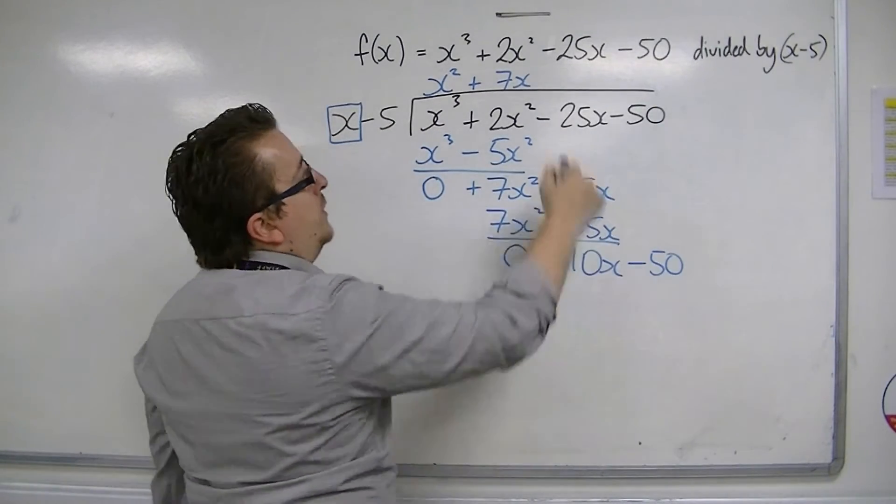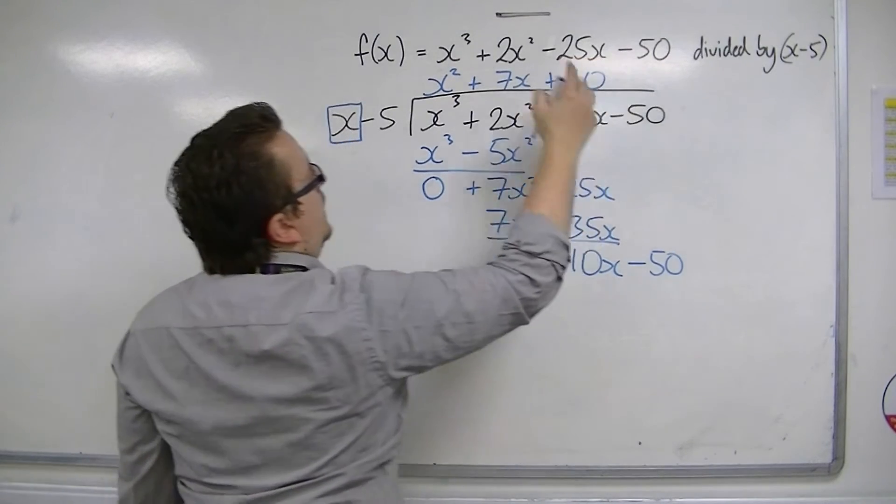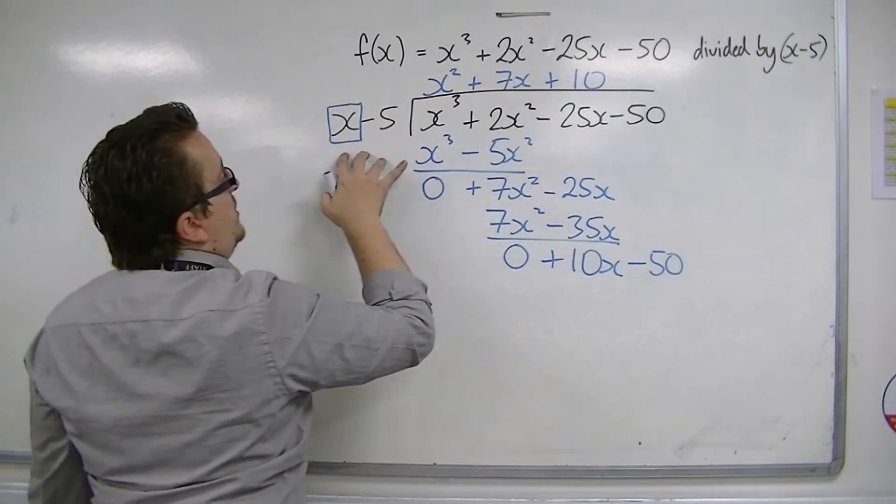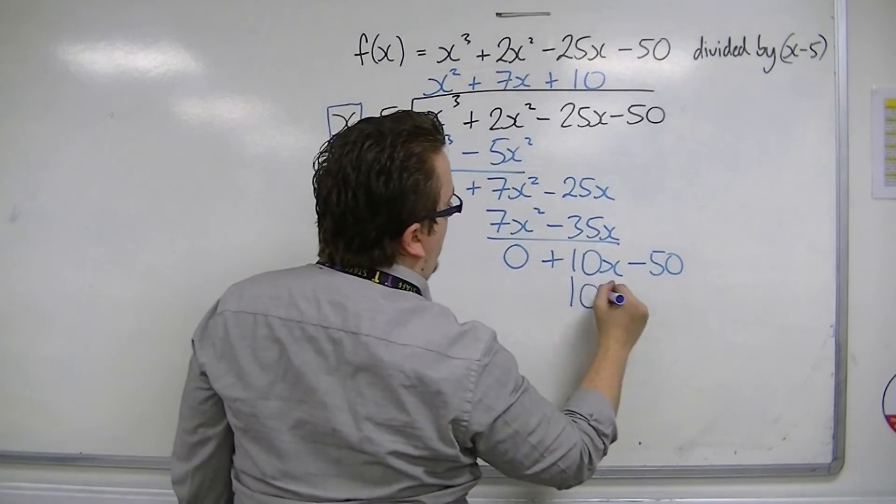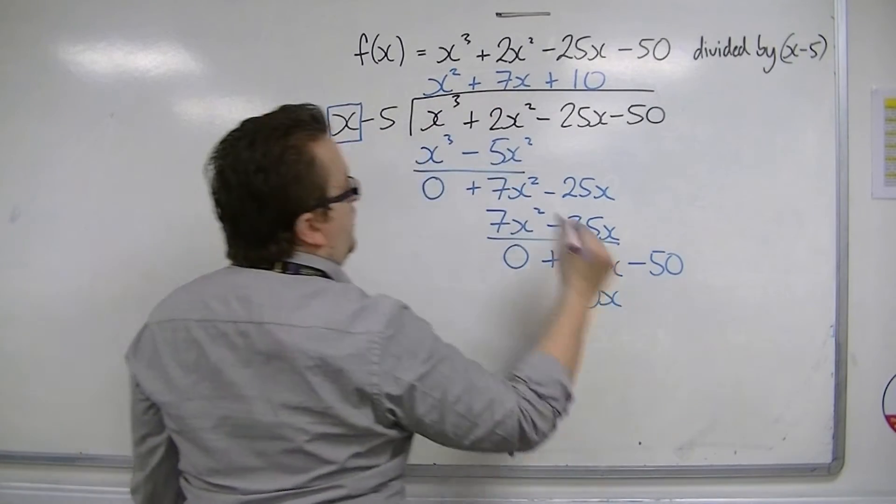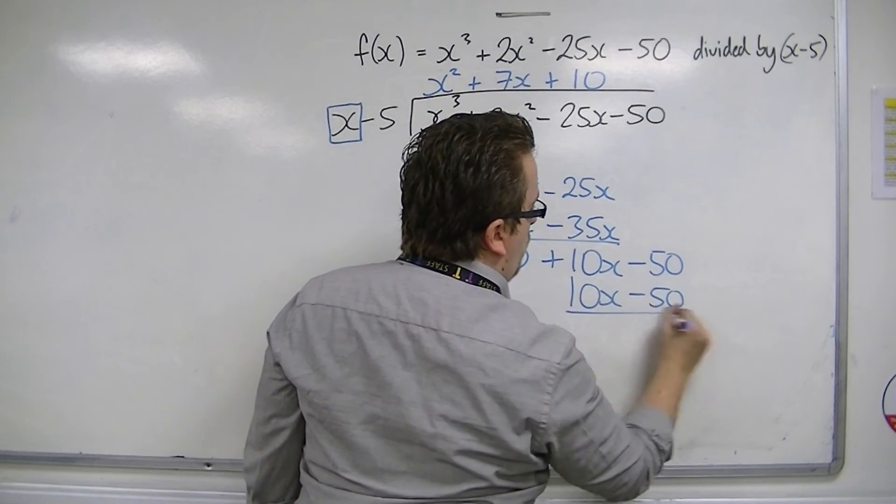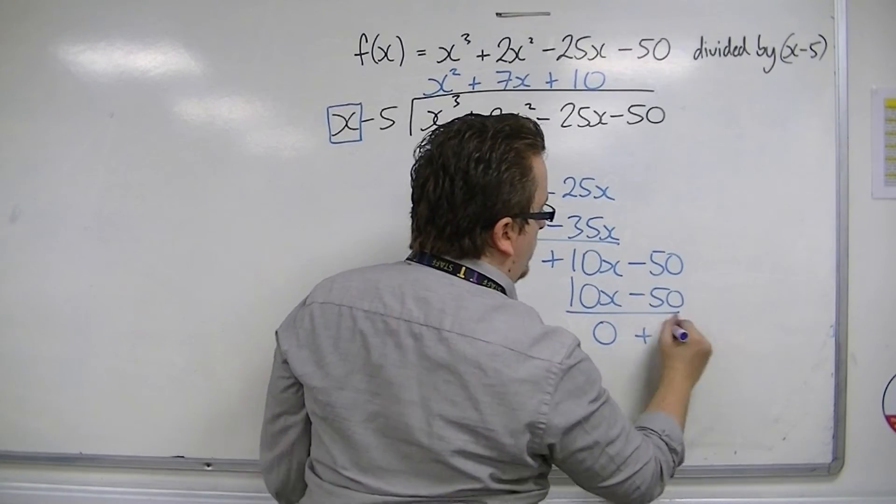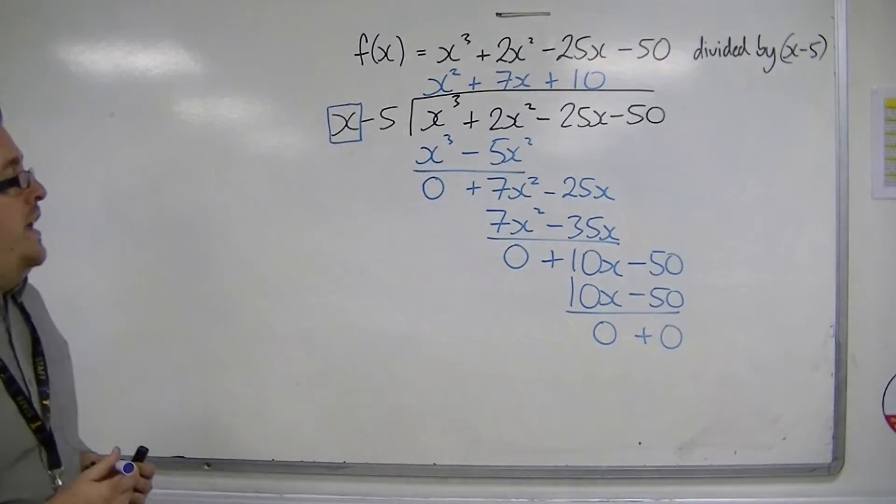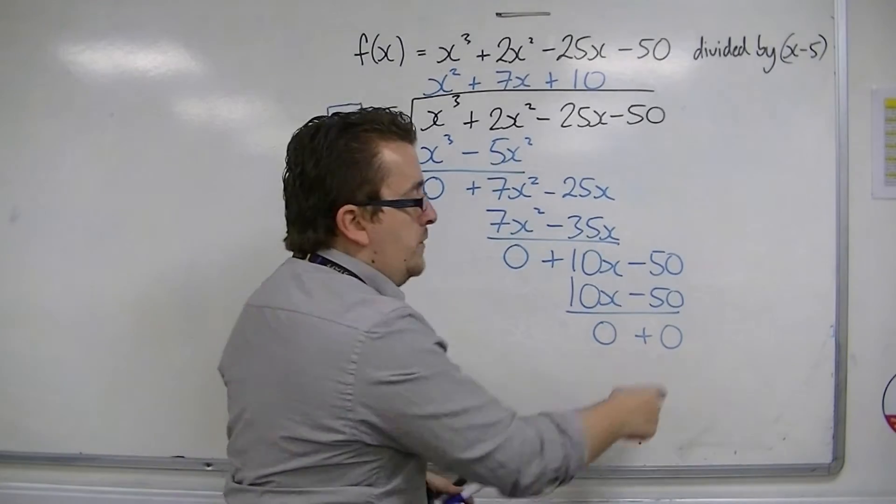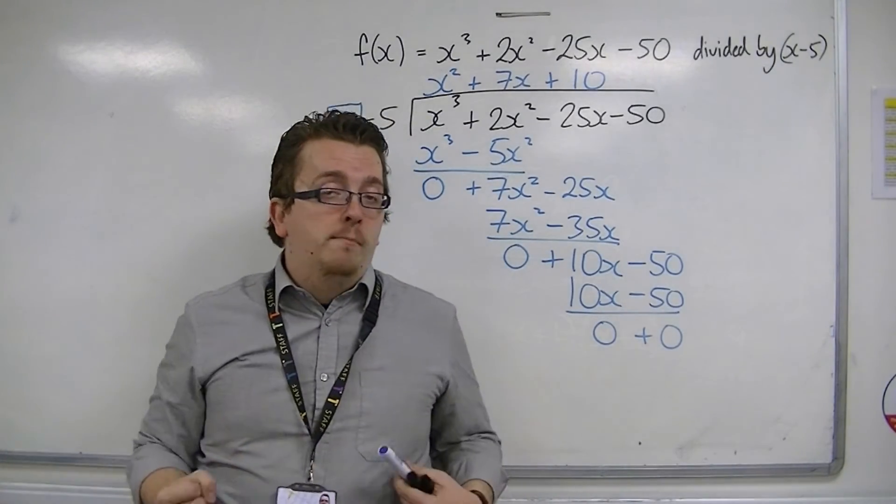x's into 10x go 10. Then multiply the 10 by these two terms. 10 times x is 10x. 10 times minus 5 is minus 50. Draw a line, perform a subtraction. So then, what you have found is that because you've got to 0, there is no remainder.